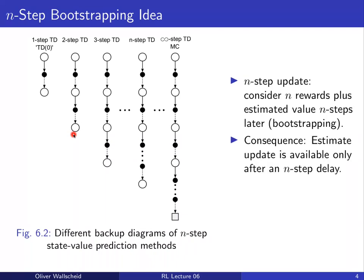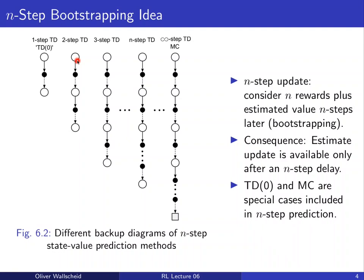A direct consequence of n-step bootstrapping is that the estimate for our starting state is only available after an n-step delay. For one-step TD we wait until reaching the successor state; for two-step TD we wait two time steps. This delay can be considered a drawback of n-step methods as it may slow down learning. TD(0) and Monte Carlo updates are the special cases of n-step prediction as the two extreme cases.